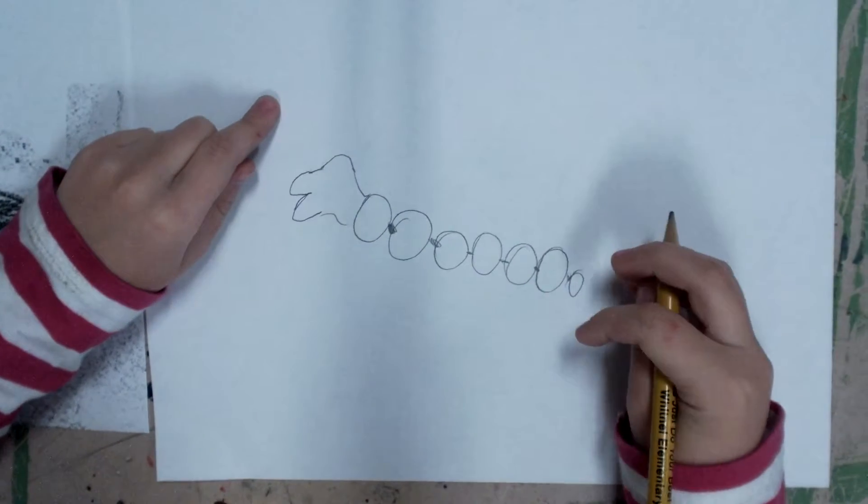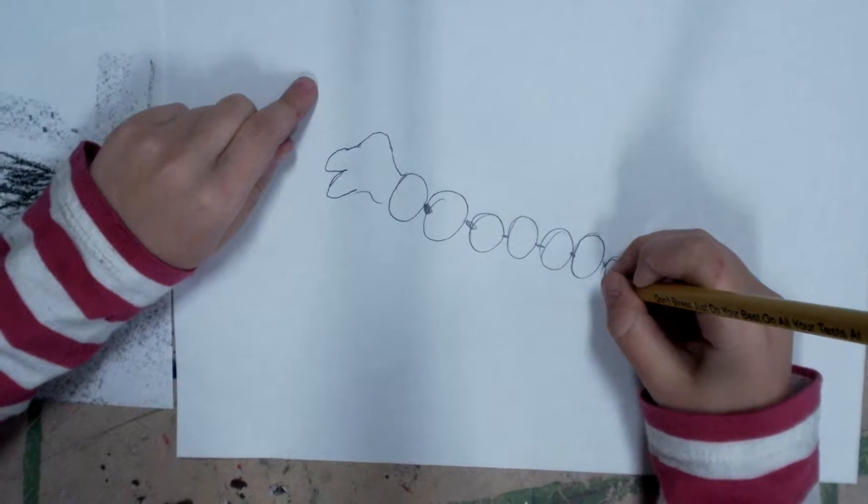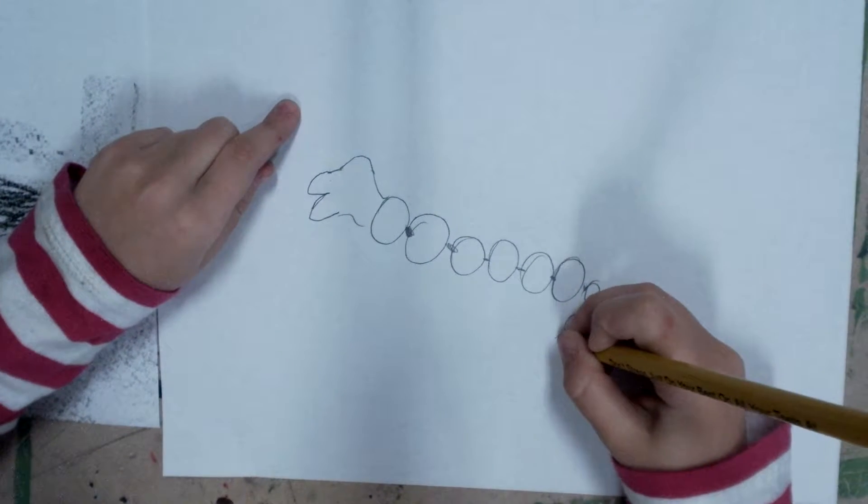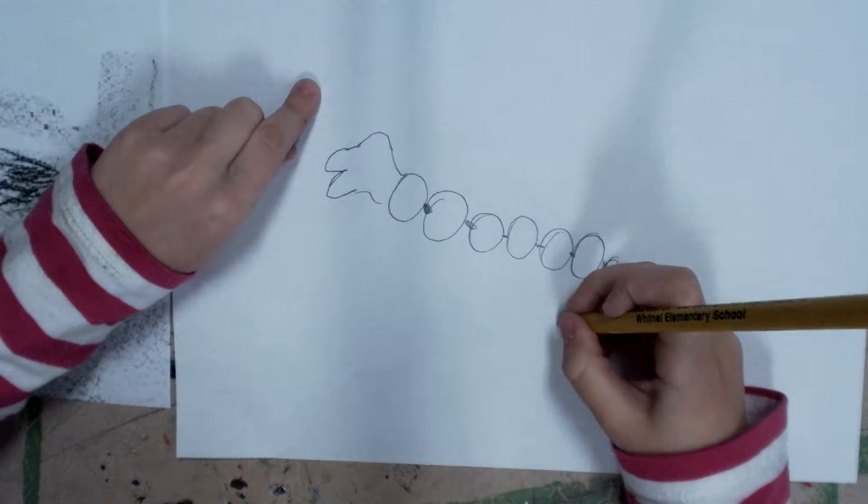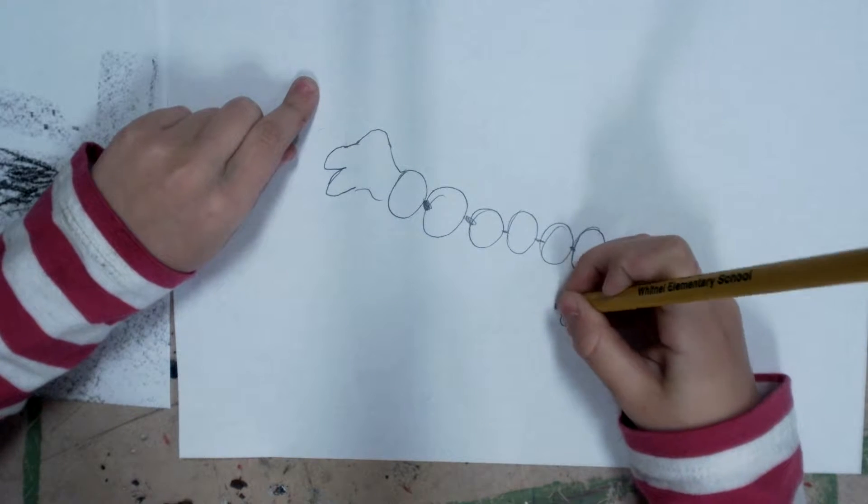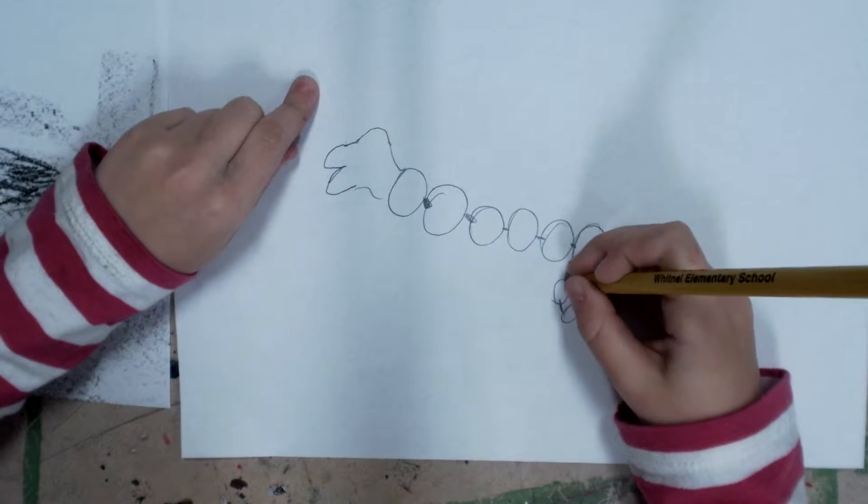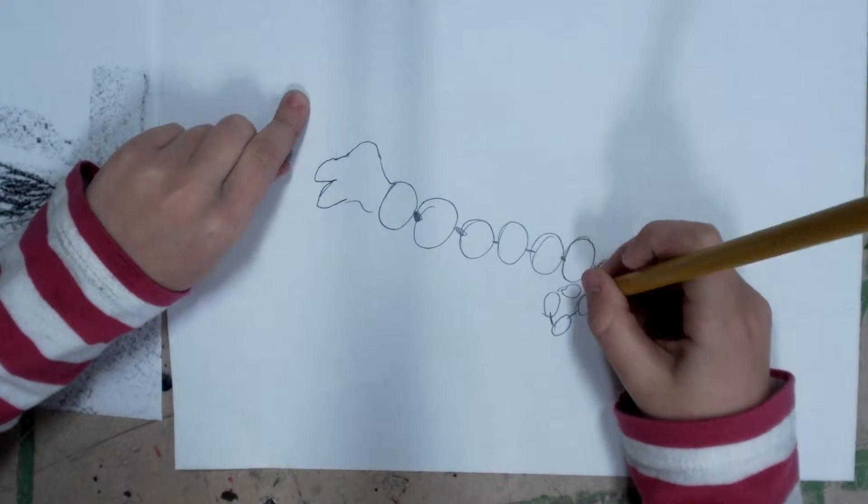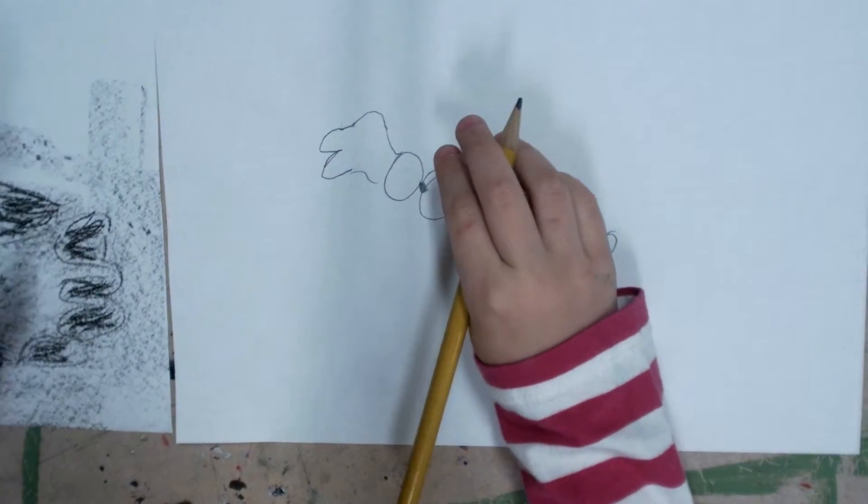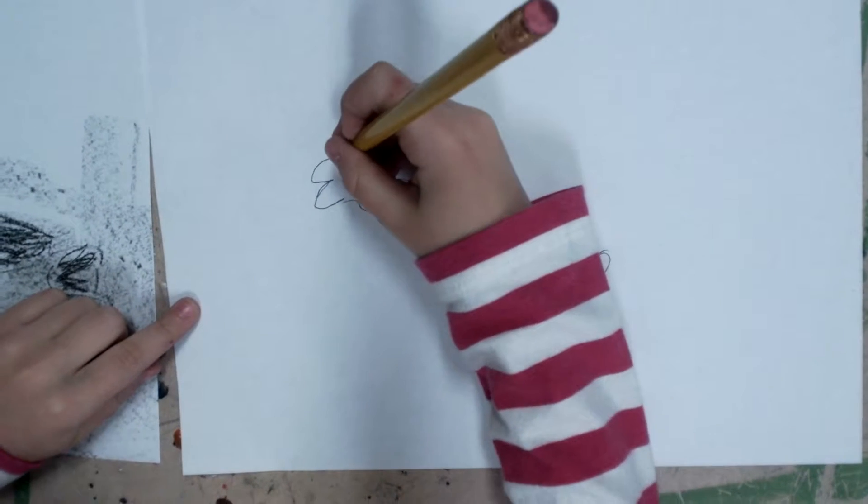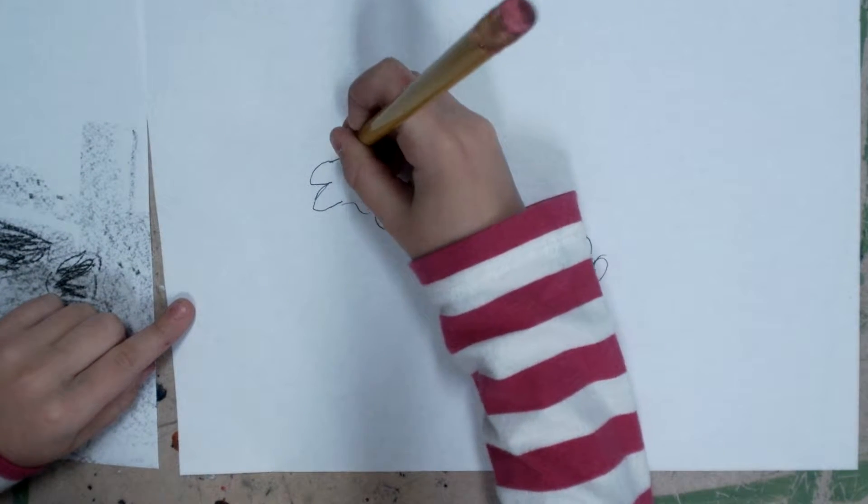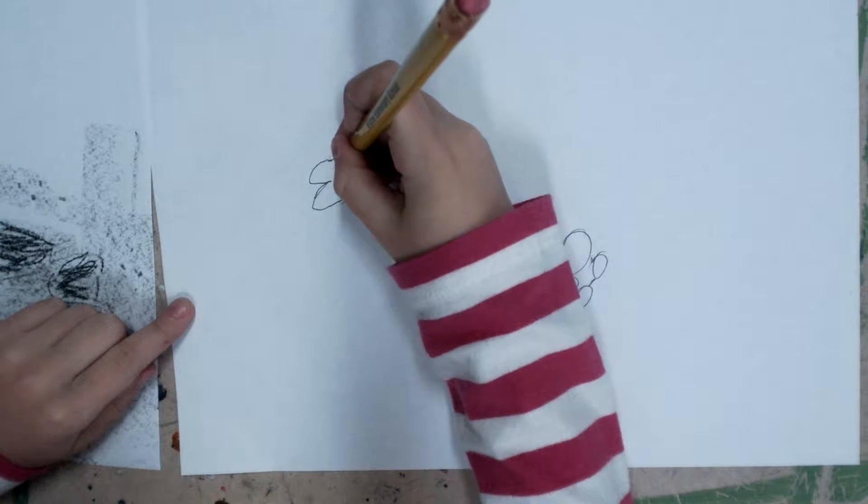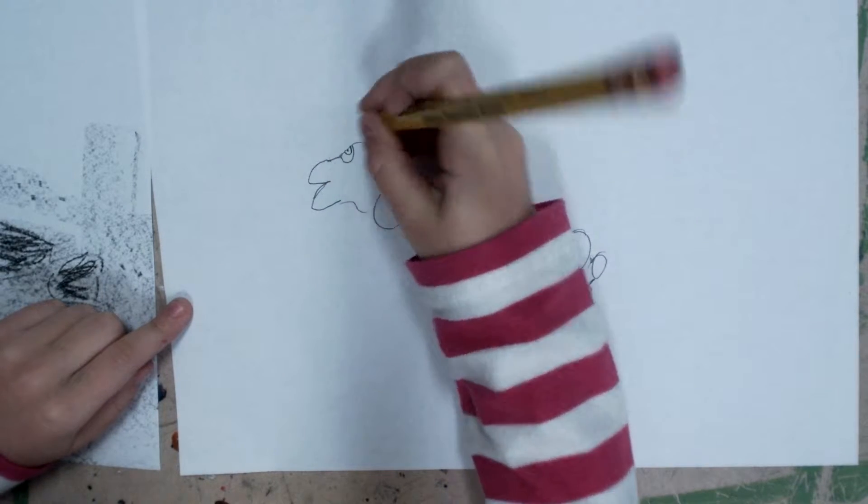Once you're done with that part, you go this way. It's like you keep going around and around. After you do that, what you do is we're going to make a big circle right here. It's like goggles. Then you make another loop and a little tongue.